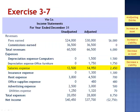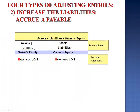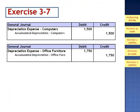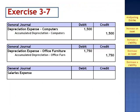The next account is salaries expense. Its balance went from $12,500 up to $14,950. Chances are we accrued that liability — increasing the year-end liability for the number of days that our employees have worked but not yet been paid. The adjusting entry debited the expense account, increasing the expense, and created the liability. The probable adjusting entry is a debit to salaries expense and a credit to salaries payable.